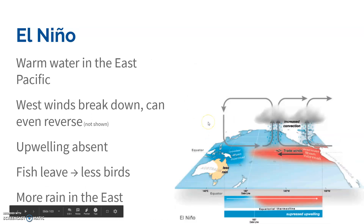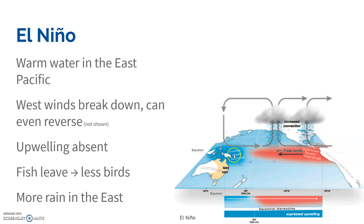During El Niño, something happens where those trade winds blowing off South America weaken — sometimes they can even reverse and start blowing the other direction. Once that happens, it's like when you're a kid playing in a bathtub and you slosh all the water to one side; all that warm water sloshes back to the South America side. When that happens, we have all this hot water suppressing that upwelling.